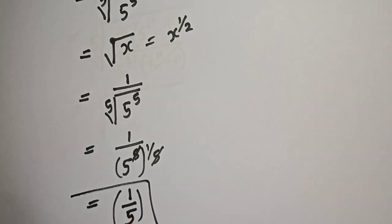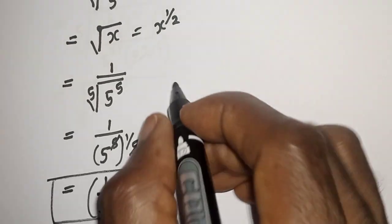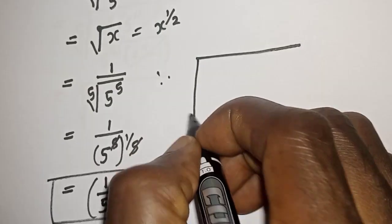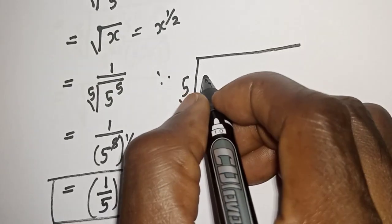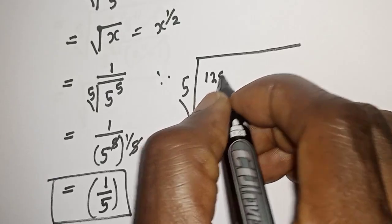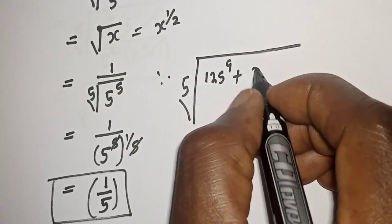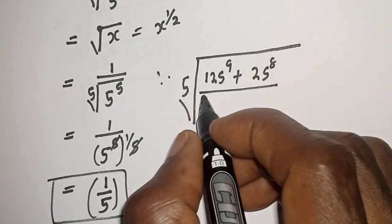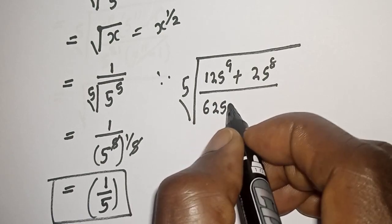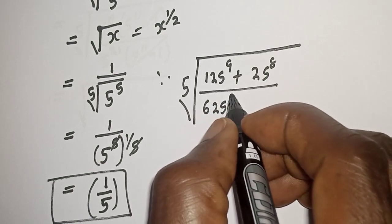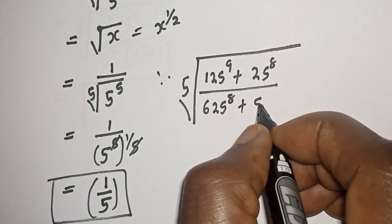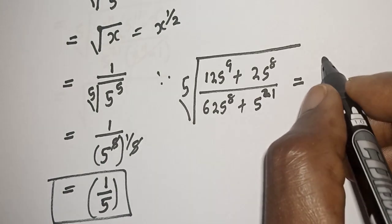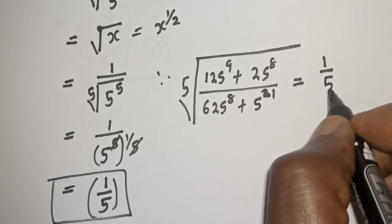This is the final answer. Therefore, the 5th root of 125 raised to power 9 plus 25 raised to power 8, divided by 625 raised to power 8 plus 5 raised to power 21, is equal to 1 over 5.